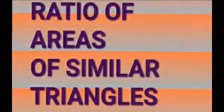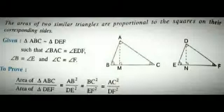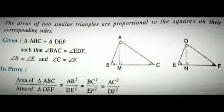Next, ratios of areas of similar triangles. The ratio of the perimeters of similar triangles remains the same as the ratio of their corresponding sides. However, areas are different. If two triangles ABC and DEF are similar, then the area of triangle ABC by area of triangle DEF equals AB squared by DE squared, equals BC squared by EF squared, equals AC squared by DF squared. Also, if you take the perpendiculars, AM squared by DN squared applies as well.